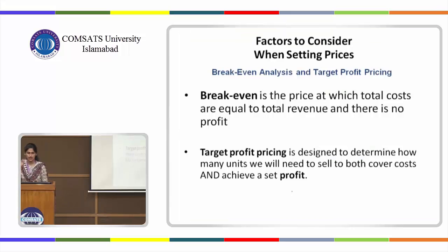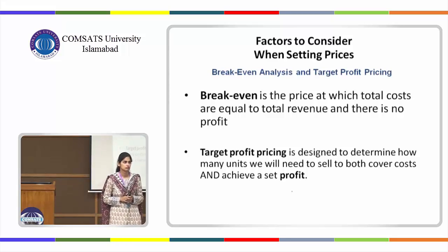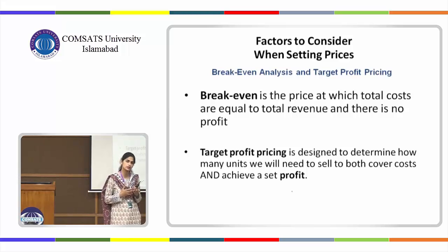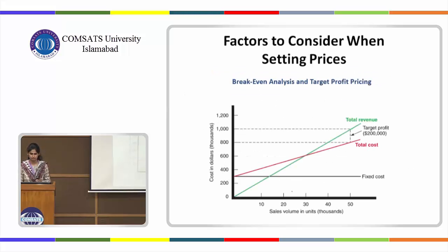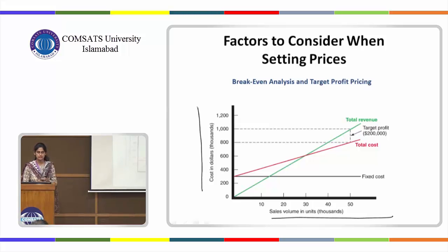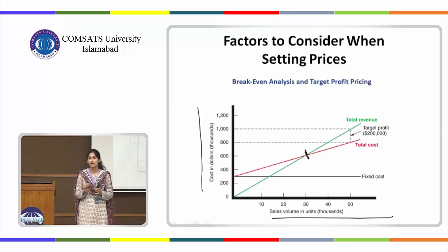Target profit pricing is based on break-even analysis. Break-even is the point where total revenue intersects with total cost — where profit is zero and expenses equal revenue. In target profit pricing, you look at a graph with sales volume on the x-axis and cost in dollars on the y-axis, and the point where total revenue and total cost meet is the break-even point.